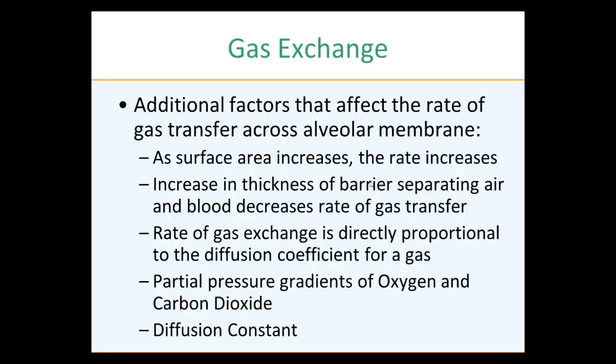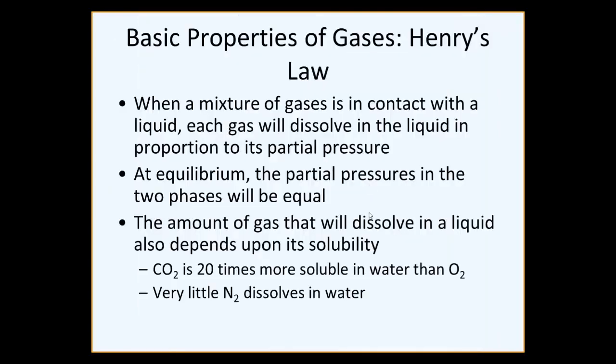Going back to partial pressure at equilibrium: similar to diffusion equilibrium, the two sides become equal. Once equilibrium is reached, the partial pressure of carbon dioxide is 40 on both sides, and the partial pressure of oxygen is 100 on both sides.